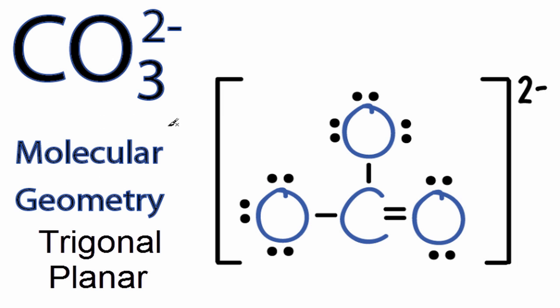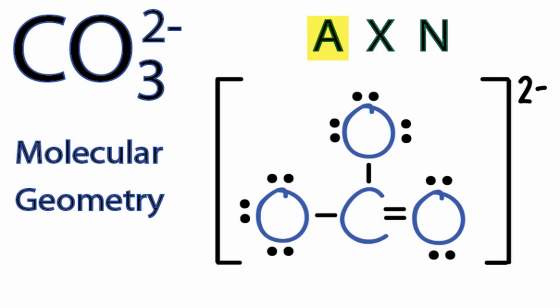We can also use the AXN notation to make sure we have the correct molecular geometry for CO3 2 minus. A, that's the carbon. And then X, that's the number of atoms bonded to the carbon. There are three oxygens, so we'll put a three there.